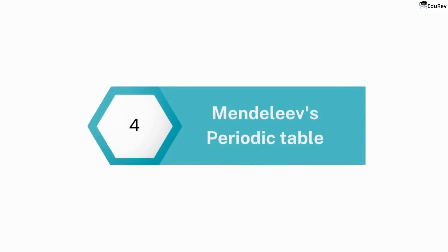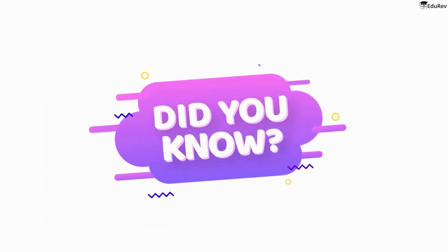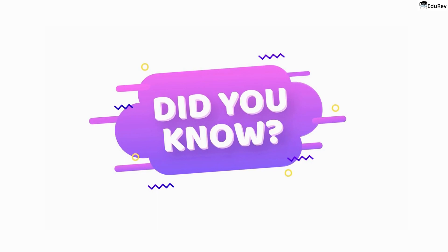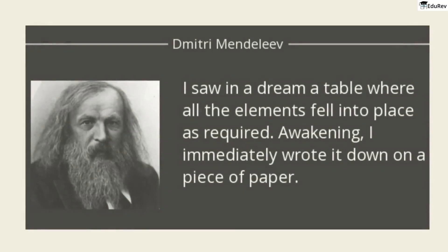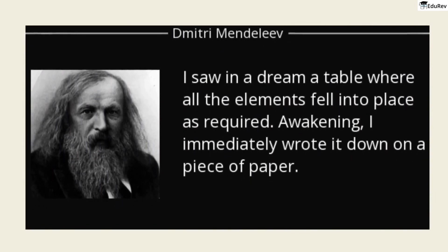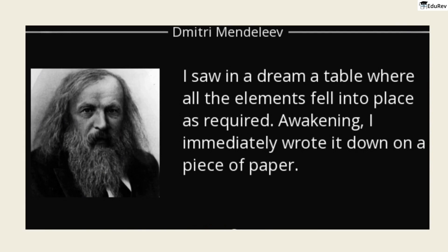Let us now study about Dmitri Mendeleev's periodic table of the elements, which is one of the most significant achievements in the history of chemistry. Did you know that Mendeleev, the creator of the first version of the periodic table, had a dream that helped him arrange the elements in a systematic way? In his dream, he saw cards with the elements on them arranged in rows and columns according to their properties, and when he woke up, he immediately wrote down the elements and their properties in the same arrangement.